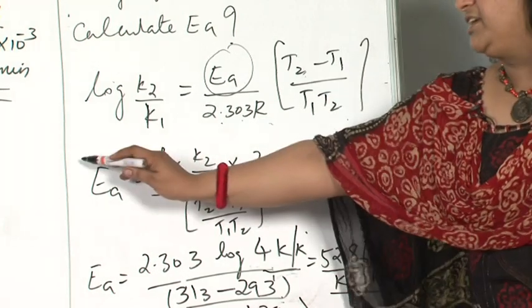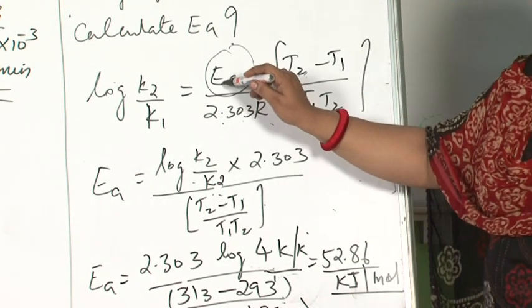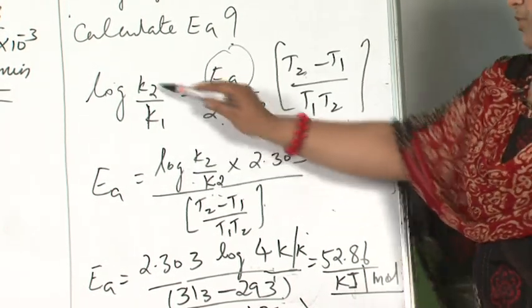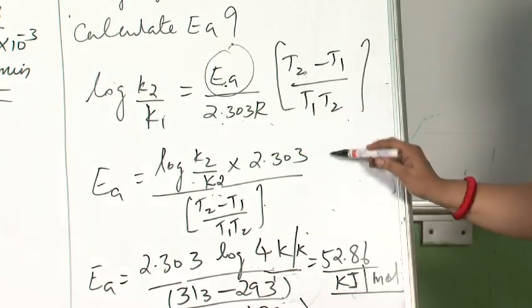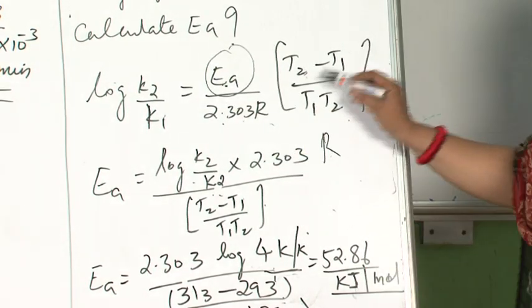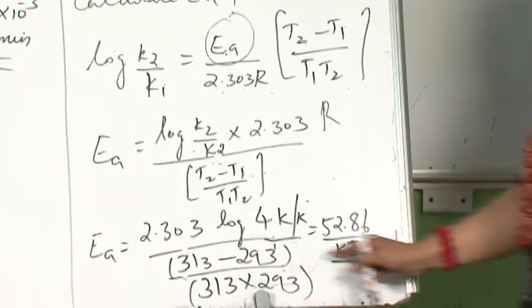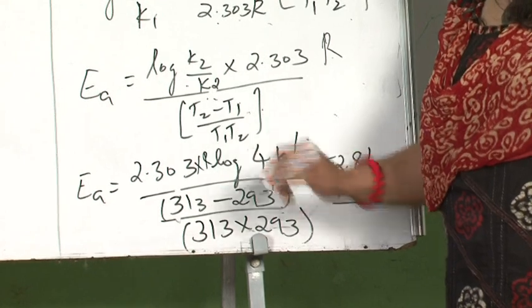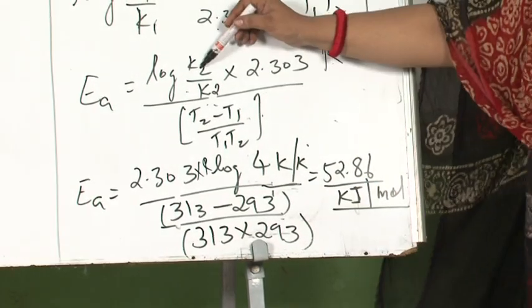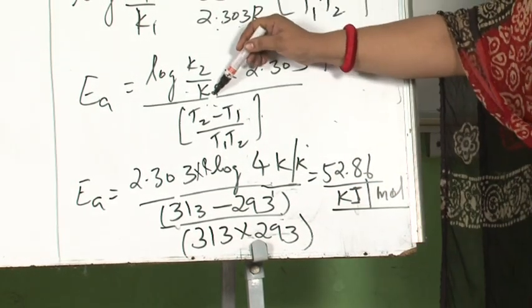Multiplying by 2.303R and rearranging, Ea equals log k2 upon k1 times 2.303R divided by (T2 minus T1) upon T1 T2. When I put the values, R is 8.314. k2 upon k1 is 4k upon k.